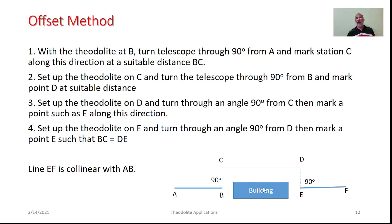The offset method is very simple. Set the equipment at B and turn 90 degrees with respect to AB, then mark station C conveniently. From C, take a backsight on B and turn the telescope 90 degrees to get direction EF in line with AB; mark station D. Occupy D, take a backsight at C, turn through 90 degrees, and mark station E such that BC = DE. From station E, turn through 90 degrees to get direction EF in line with AB.